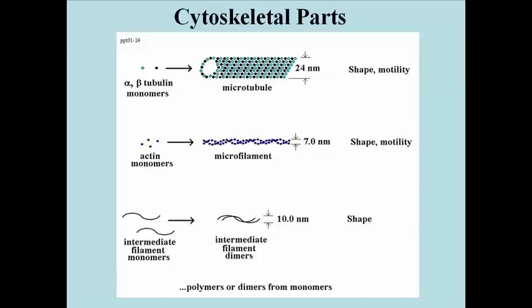Microtubules are shown at the top. These are made up mostly of polymerized alpha and beta tubulin polypeptides, and they're involved in cell shape as well as in cell motility. Microtubules are thought to be hollow tubes. At 24 nanometers in diameter, they're the largest cytoskeletal element.